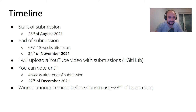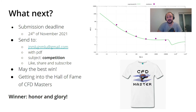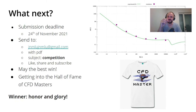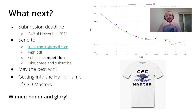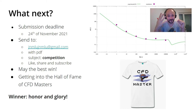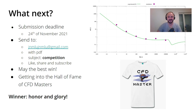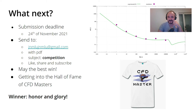Like in the previous four competitions, you guys decide who will win. You can vote until December 22nd, and then the announcement will be before Christmas. Please don't forget the deadline: November 24th — send your PDF to jnmlu at gmail.com with the subject 'competition'. As for prizes, I'm going to design a custom t-shirt for the winner, and the main goal is to get into the Hall of Fame of the CFD masters. We have four already and you can be the fifth — honor and glory is the most important prize. I hope you like this video, please hit the like button, thank you for watching, and I hope to see you next time.